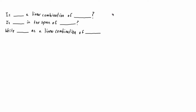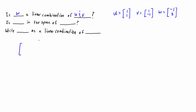Let's say we have vector u = [1, 1], vector v = [1, -1], and vector w = [-1, 3]. You might be asked: is w a linear combination of u and v? To solve this, we write our augmented matrix with columns u and v — so [1, 1] and [1, -1] — and then w as the right-hand side of the divider, which is [-1, 3].